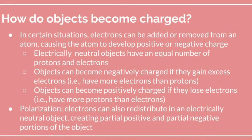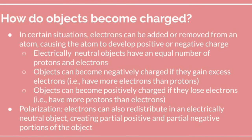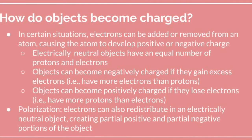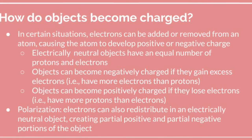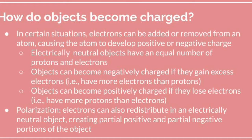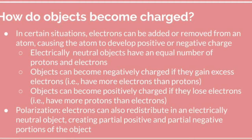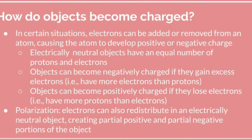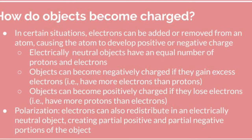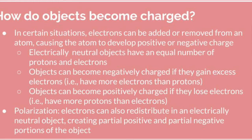When you lose the negative charge, you end up with excess positive charge, giving you a net positive charge. Then we have a process called polarization, where you're not actually losing or gaining electrons. You have an electrically neutral object, but electrons are redistributing within that object, creating a partial positive and a partial negative portion — one side slightly negative, one side partially positive.